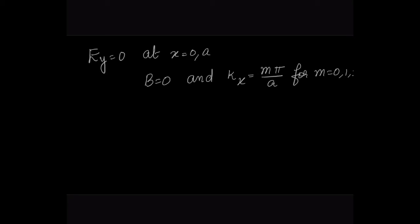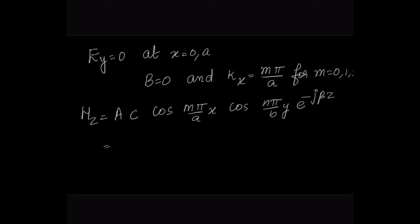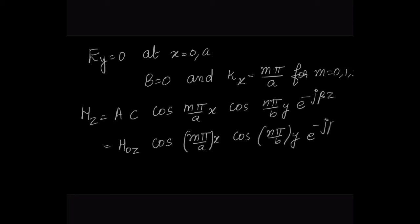Substituting all values of kx, ky, and the constants A, B, C, D into the equation, Hz can be written as Hz₀·cos(mπx/a)·cos(nπy/b)·e^(−jβz), where Hz₀ is the amplitude constant.